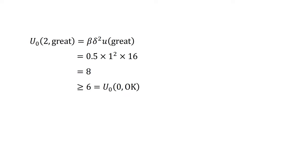But what if they could commit themselves today? For example, suppose they could purchase a non-refundable, non-resaleable ticket to the great movie in two weeks. The result is that a sophisticated present-biased agent would buy a ticket to the great movie in two weeks and prevent their future self from changing their action.